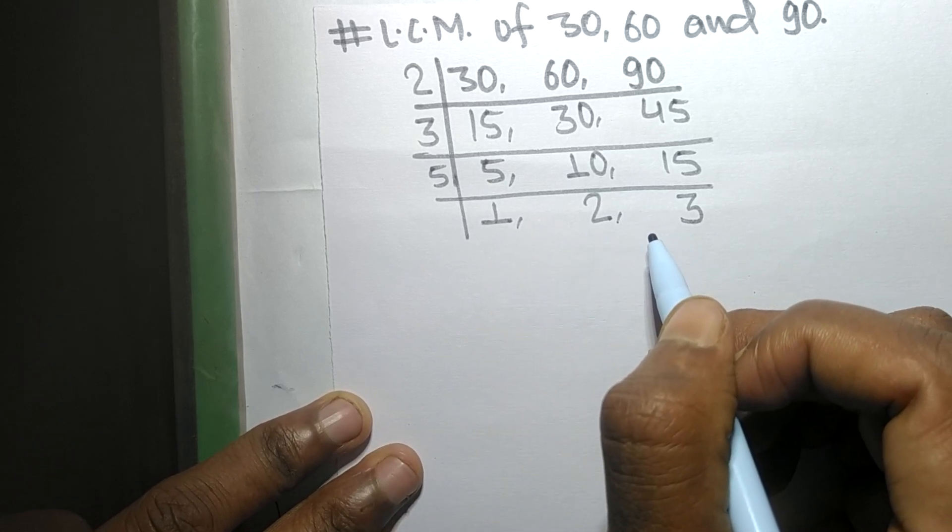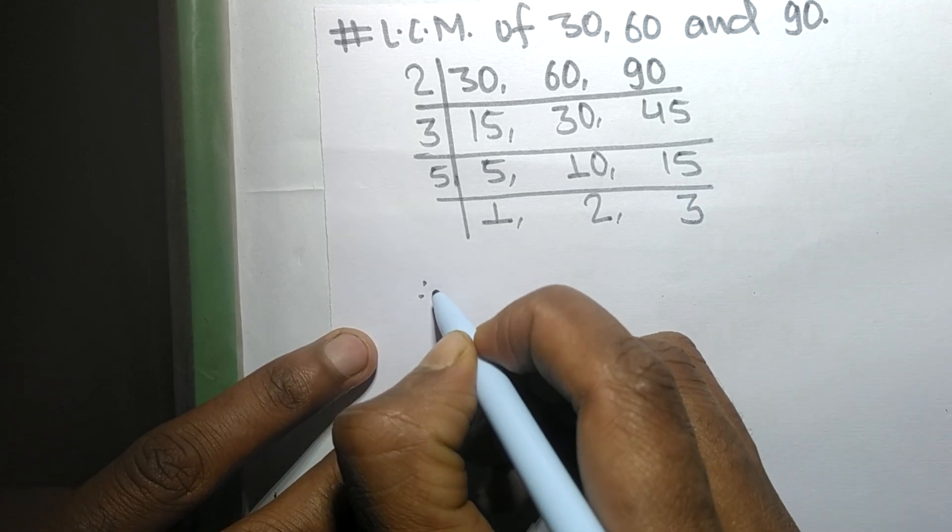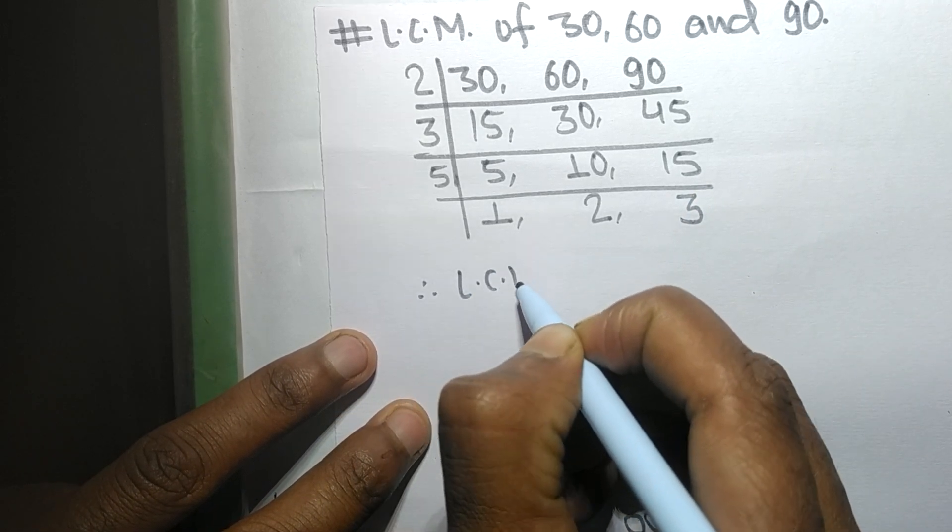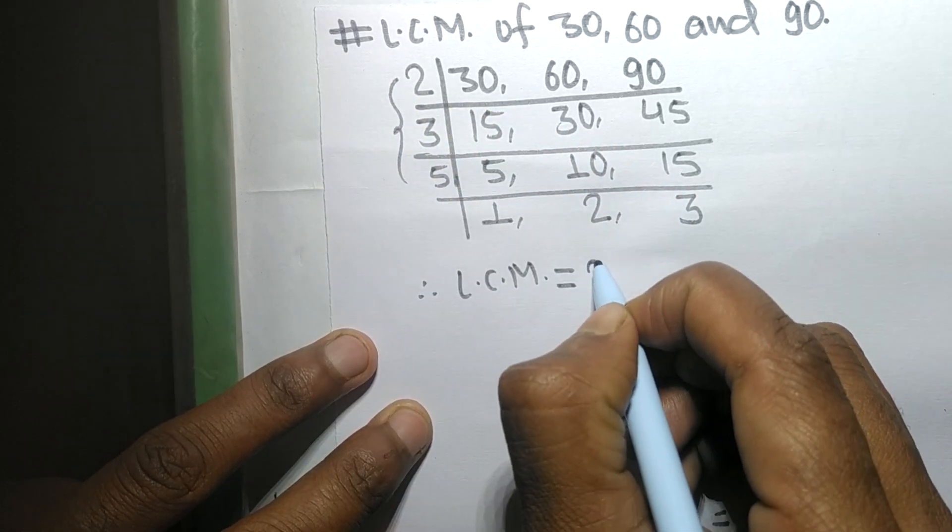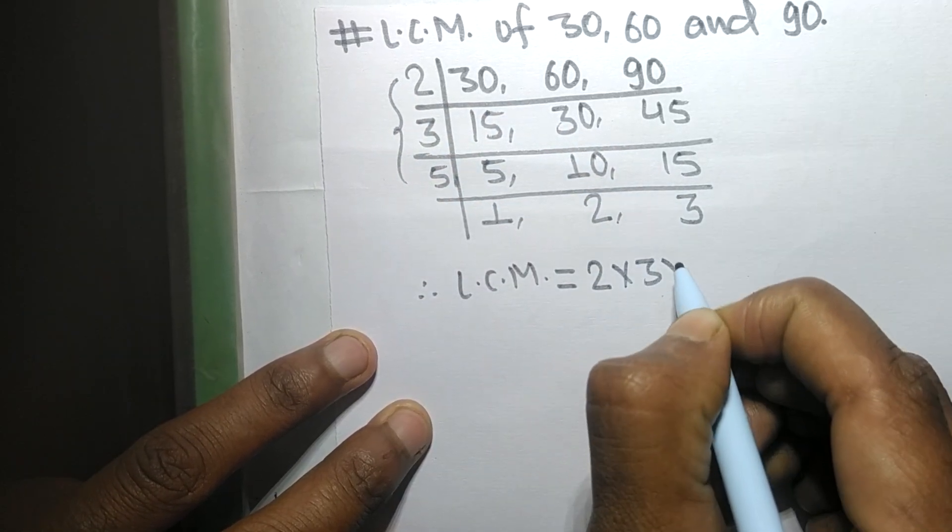exactly divisible by the same number. Therefore, its LCM is equal to, from this side, it is 2 times 3 times